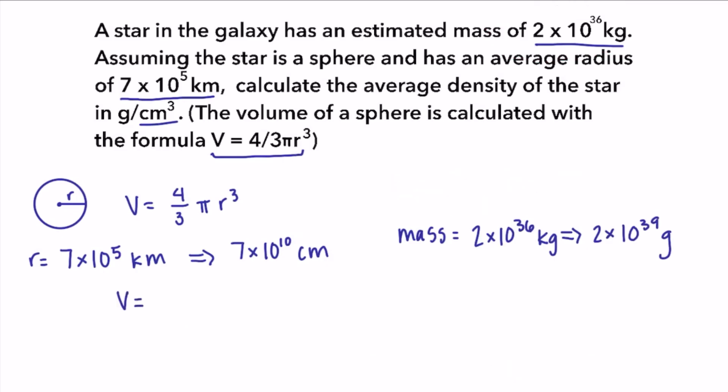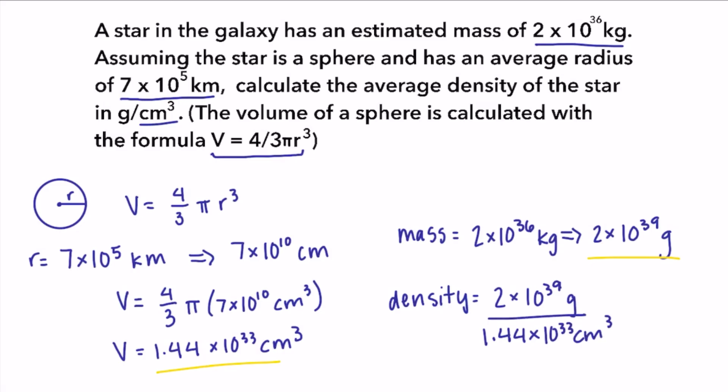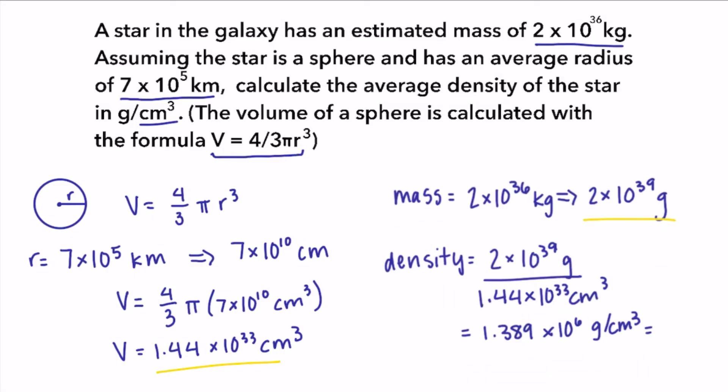Now we substitute that value into the formula to get a volume of 1.44 times 10 to the 33rd centimeters cubed. We can substitute our mass and volume into the density formula, like so, and we have an answer of 1.389 times 10 to the 6th grams per centimeters cubed. Our givens only had one significant figure, so we're going to round our final answer to 1 times 10 to the 6th grams per centimeter cubed.